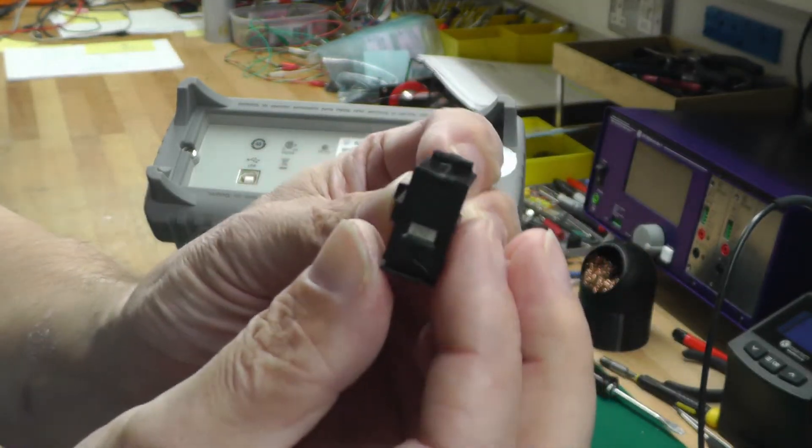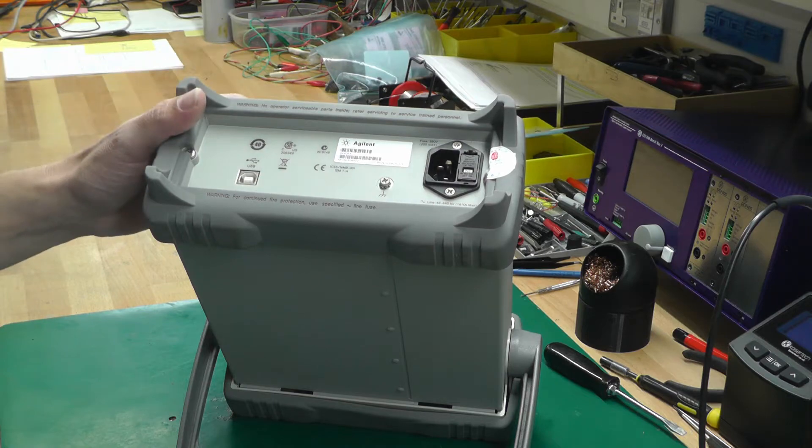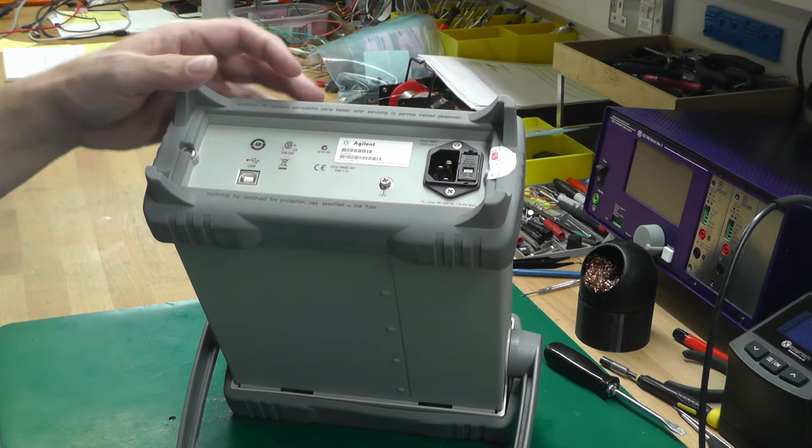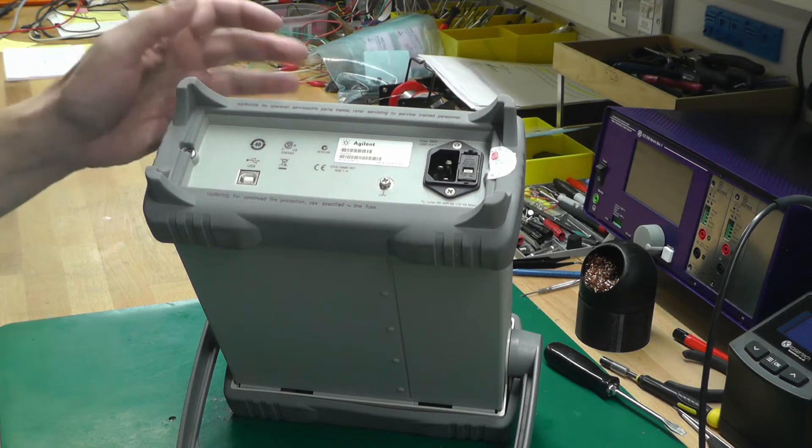The first thing I'm going to do is take off the rubbers, take off the tilt and bail, open it up, and let's have a look inside and see if there's any visible obvious damage.